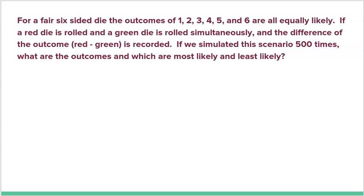Next example: for a fair six-sided die, the outcomes of one, two, three, four, five, and six are all equally likely. If a red die and a green die are rolled simultaneously and the difference of the outcome — red minus green — is recorded, and we simulate this 500 times, what are the outcomes that are most likely and least likely?